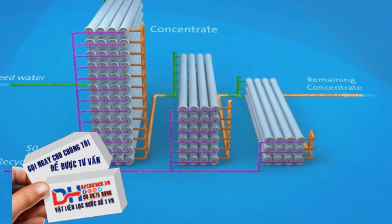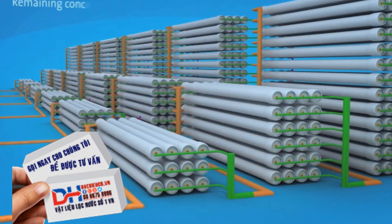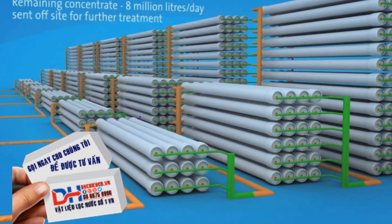The remaining concentrate contains so much salt and impurities that to recycle it would not make economic sense. This concentrate stream of 8 million litres a day is sent to North Head Wastewater Treatment Plant, where it is treated.